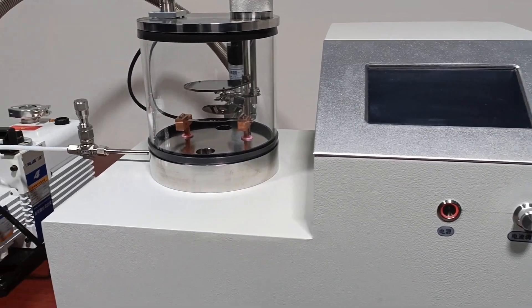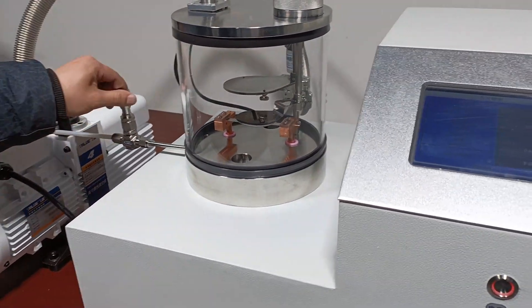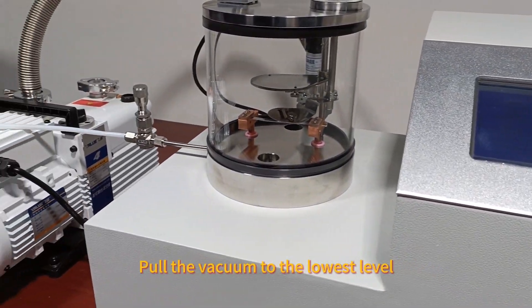Turn on the vacuum pump switch, open the intake valve, and pull the vacuum to the lowest level.